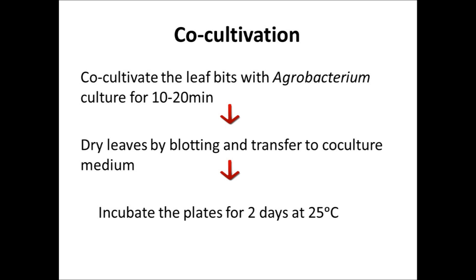Co-cultivation: Co-cultivate the leaf bits with Agrobacterium culture for 10 to 20 minutes. Dry the leaves by blotting them and transfer to co-culture medium. Then they are incubated for 2 days at 25 degrees Celsius.